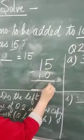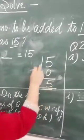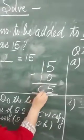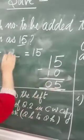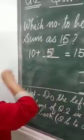We will subtract 5 minus 0 is 5 and 1 minus 1 is 0. Okay, so answer is 5. We have to subtract and find out the answer.